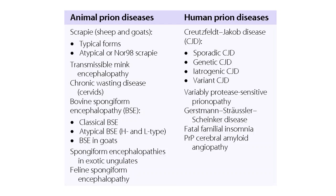Animal prion diseases include scrapie, transmissible mink encephalopathy, chronic wasting disease, bovine spongiform encephalopathy, spongiform encephalopathies in exotic ungulates, and feline spongiform encephalopathy. Human prion diseases include Creutzfeldt-Jakob disease — which can be sporadic, genetic, iatrogenic, or variant — variable protease-sensitive prionopathy, Gerstmann-Sträussler-Scheinker syndrome, fatal familial insomnia, and cerebral amyloid angiopathy.